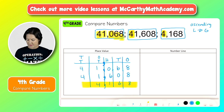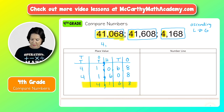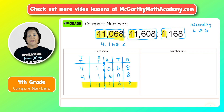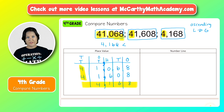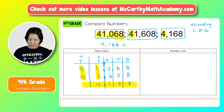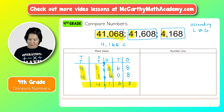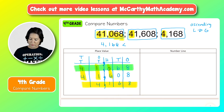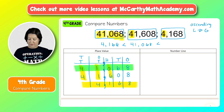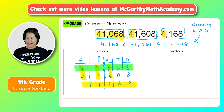Right away we can find our least number, which is 4,168 — it only goes to the thousands place. So I can write: 4,168 is less than the next smallest. Looking at the remaining two numbers, both have four in the ten thousands and one in the thousands. Then we compare hundreds: zero versus six. So the next smallest is 41,068 with zero hundreds. We can say: 4,168 is less than 41,068, which is less than 41,608. That's least to greatest; greatest to least you just flip them.